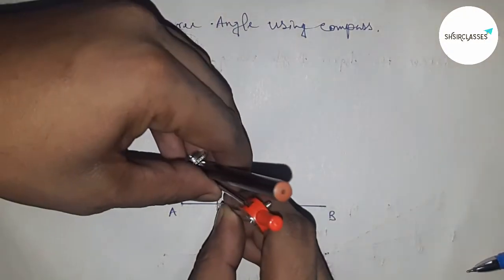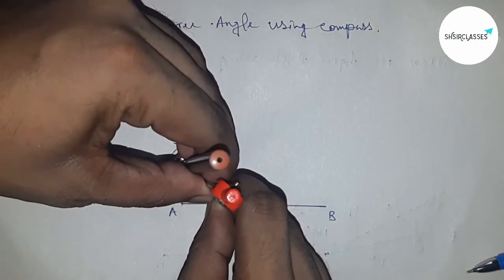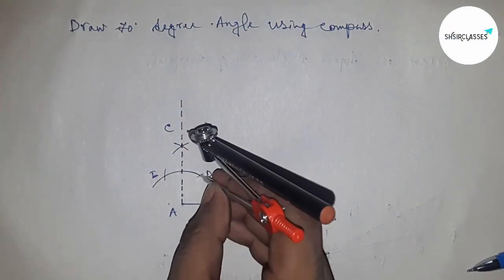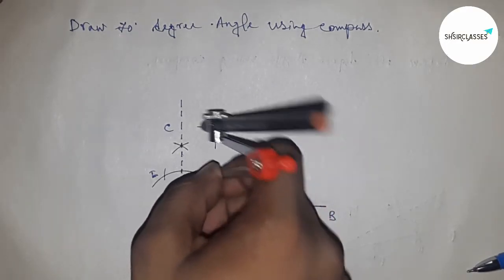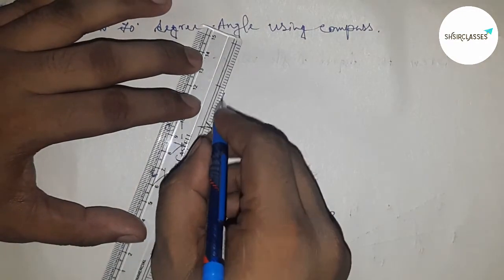Now taking the length and putting the compass here and cut the arc by this way. Next, joining A and this point.